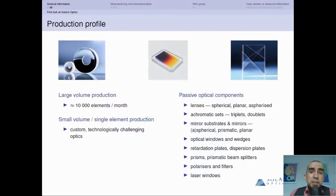The production profile of Solaris is mass production, which for us is around 10,000 elements per month, as well as small volume production cases where we deal with technologically challenging optics. Every case is custom, not an off-the-shelf product, whether it's large-scale or small-scale production.